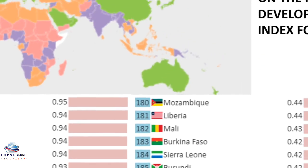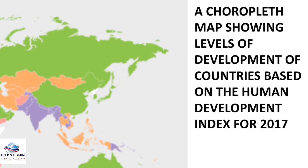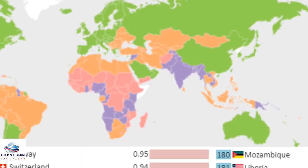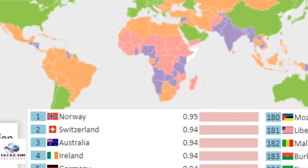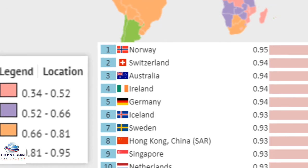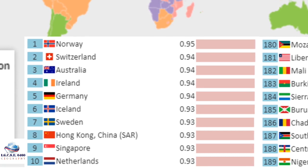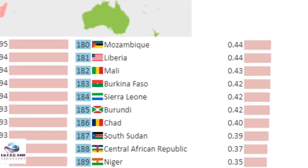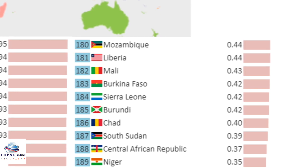Here we look at a choropleth map showing levels of development based on the HDI for 2017. With a choropleth map, different colors show different values. The key shows the top 10 most developed countries — Norway is number one with an HDI figure of 0.93. On the other side, we have the 10 least developed countries, with Niger ranked 189th at 0.35, making it the least developed country.